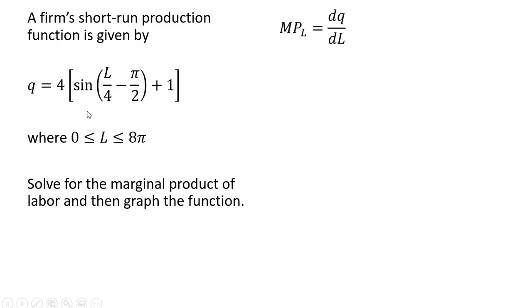So we need to take the derivative of the production function with respect to L. And note here that the derivative of the sine of what's in parentheses here will equal the following: one-fourth the cosine of what's in parentheses.